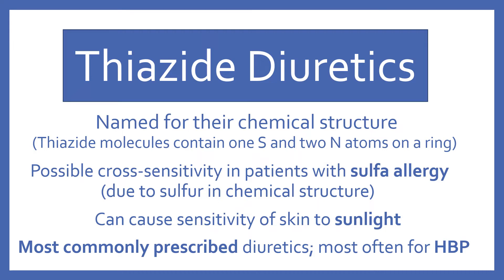Thiazide diuretics are named for their chemical structure — thiazide molecules contain one sulfur and two nitrogen atoms on a ring. Due to containing sulfur in their chemical structure, there is a possible cross-sensitivity in patients with a sulfa allergy. Thiazides can also cause sensitivity of skin to sunlight, and they are the most commonly prescribed diuretics, most often for high blood pressure.